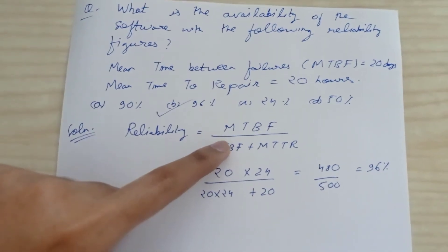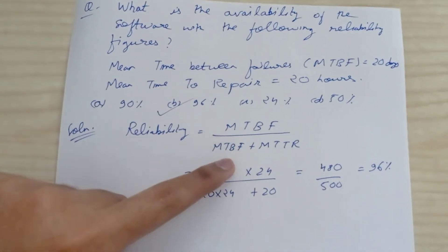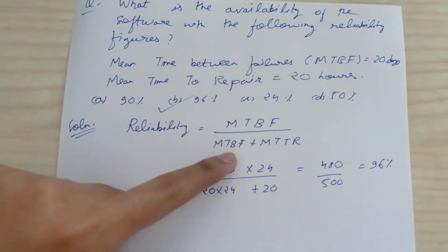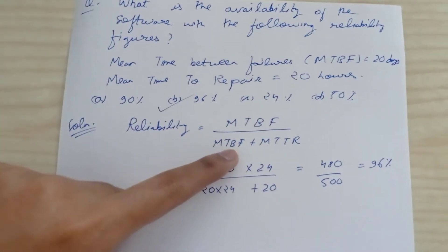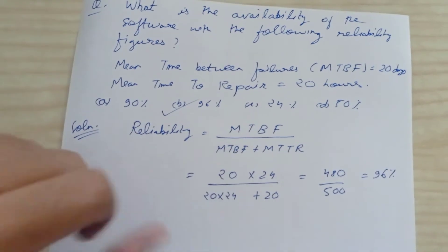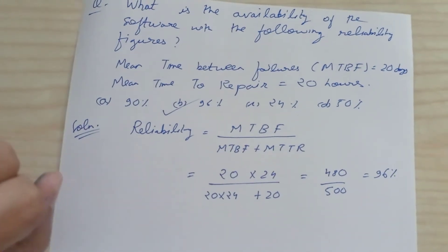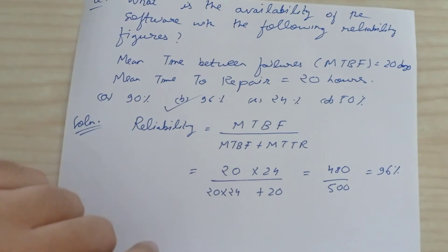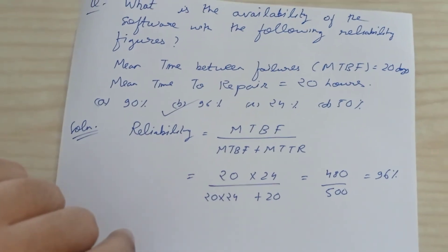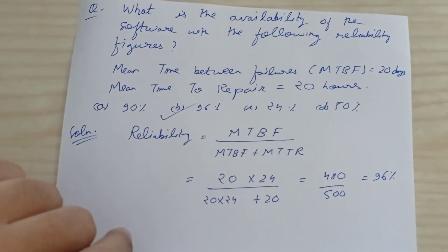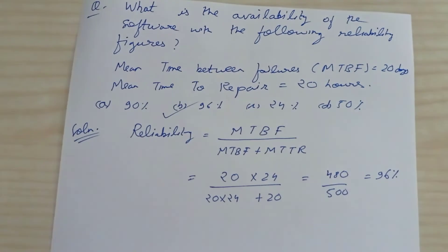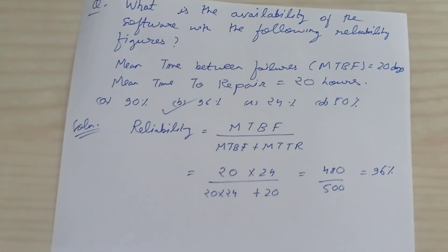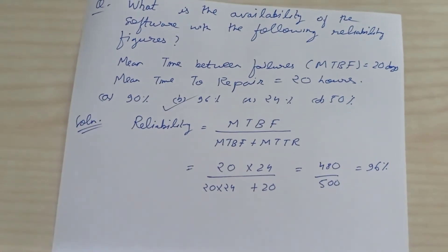Availability is calculated as MTBF divided by (MTBF + MTTR). Since MTBF is given in days, we convert it to hours: 20 days equals 480 hours. So availability equals 480 divided by 500, which equals 96 percent.